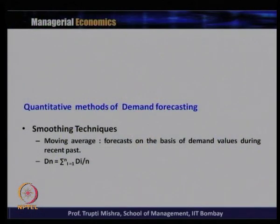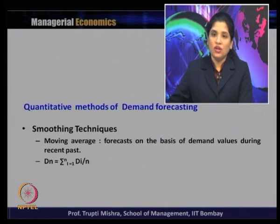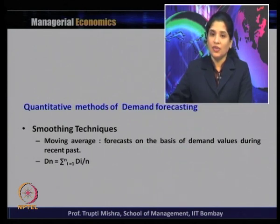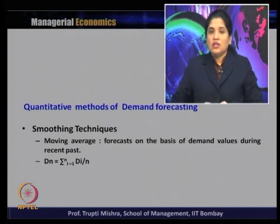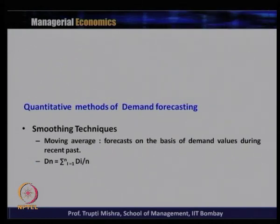There are three methods of smoothing technique. The first one is moving average. In the moving average method, the forecast is based on the demand value during the recent past. If d is the demand and n is the time period, we take the sum total of d_i divided by the number of observations. This is the most simplest version of the smoothing technique, where forecast is based only on recent past demand.